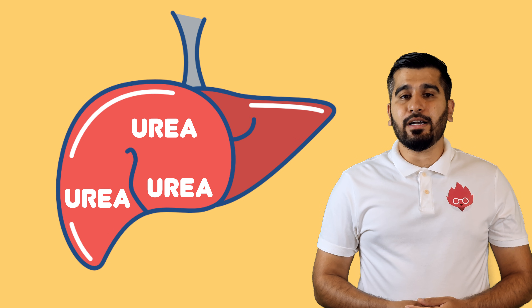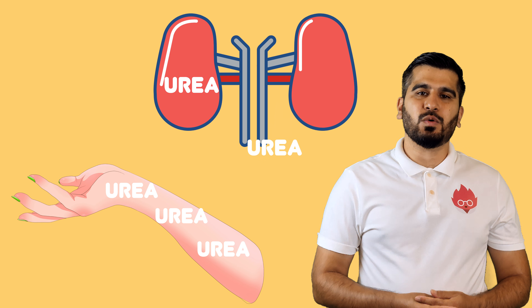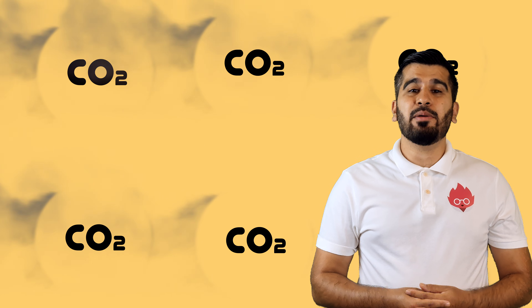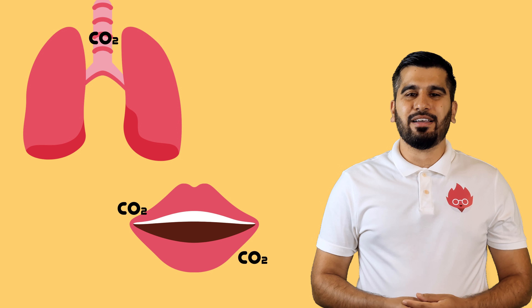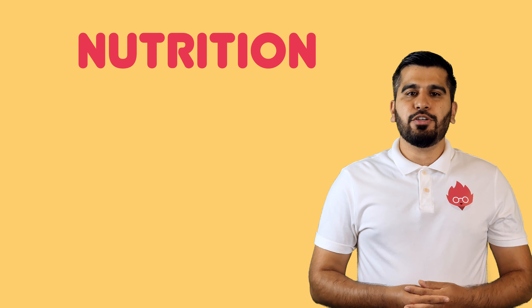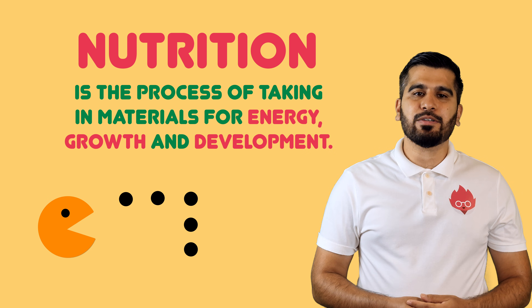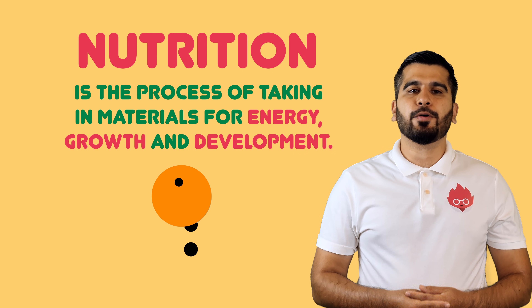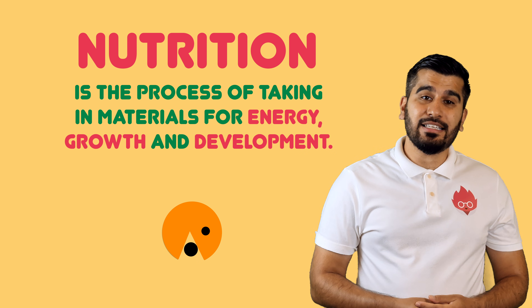Excretory substances include urea, produced in the liver and removed by our kidneys or skin, and carbon dioxide, a by-product of respiration released by our lungs. Nutrition is the ability of taking in material for energy, growth and development.